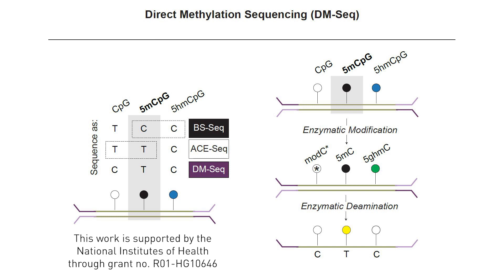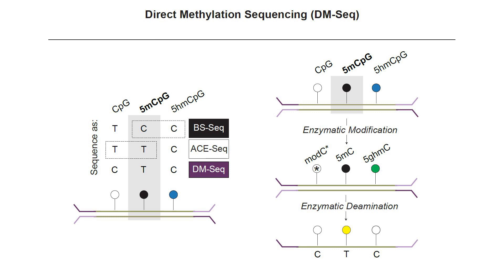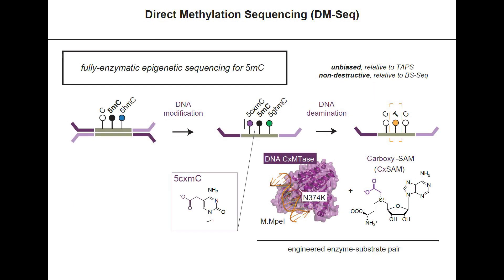Unlike that, we have developed ACESeq in the past, and now DMSeq, with the added advantage that it only sequences out 5-methylcytosine at base resolution, unlike both bisulfite and ACESeq. In order to make this possible, we had to come up with an enzymatic modification method. And we achieved this by engineering a new DNA carboxymethyltransferase enzyme, which takes on a new substrate, which is carboxy-SAM. This ultimately creates the first method which is both non-destructive and directly sequences only 5-methylcytosine at base resolution.